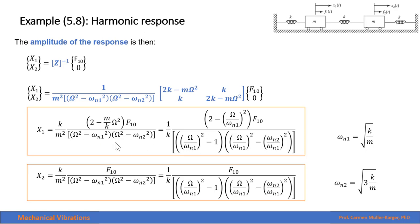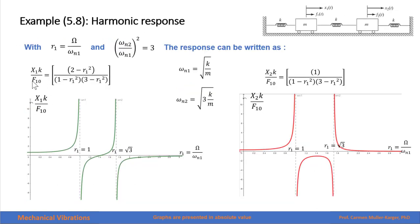We can manipulate this expression by dividing by the first natural frequency, which is the square root of k over m, and we get this expression. Remember that the forcing frequency divided by the natural frequency is called the frequency ratio. We can express the amplitude divided by the static deflection in terms of the first frequency ratio. There is a positive response here, a negative response here, and one point where the amplitude becomes zero. When the response is negative, it means it has a phase angle of 180 degrees with respect to the forcing frequency.